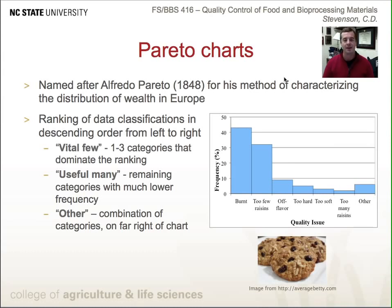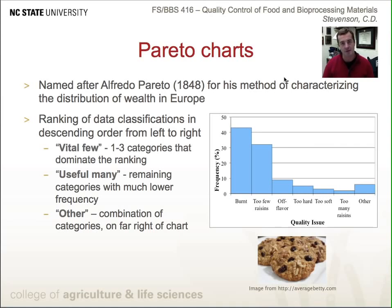There are three concepts to keep in mind in this chart. The first is the concept of the vital few — categories that dominate the ranking. In this case it's burnt cookies and cookies with too few raisins. Next, we have the useful many — those that don't come close to the vital few in frequency, but add up if stacked. These include bad off flavors, wrong texture, or too many raisins. Finally, there are smaller characteristics that individually seem minor but when combined do compare to the others.